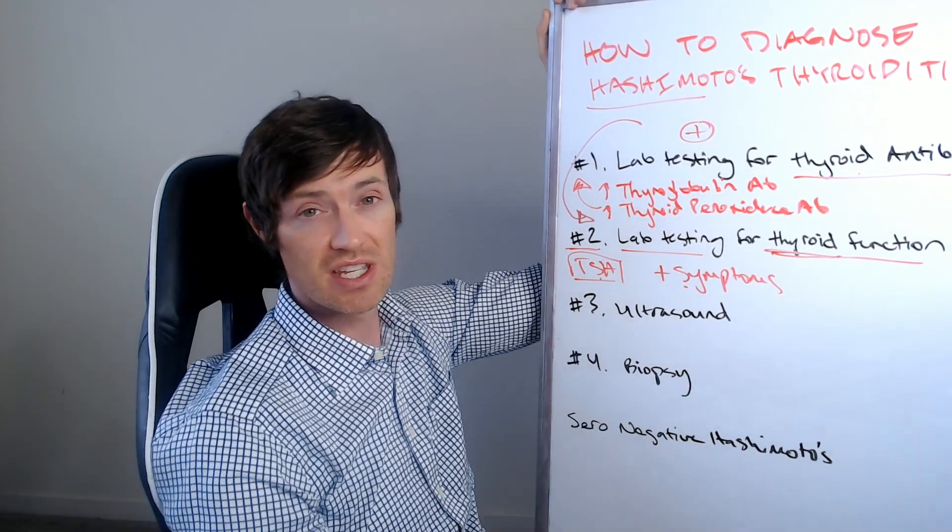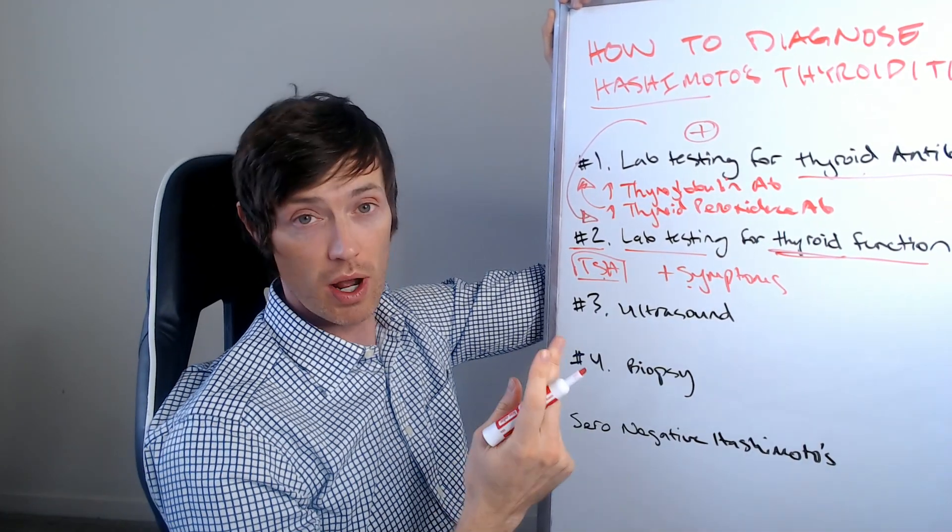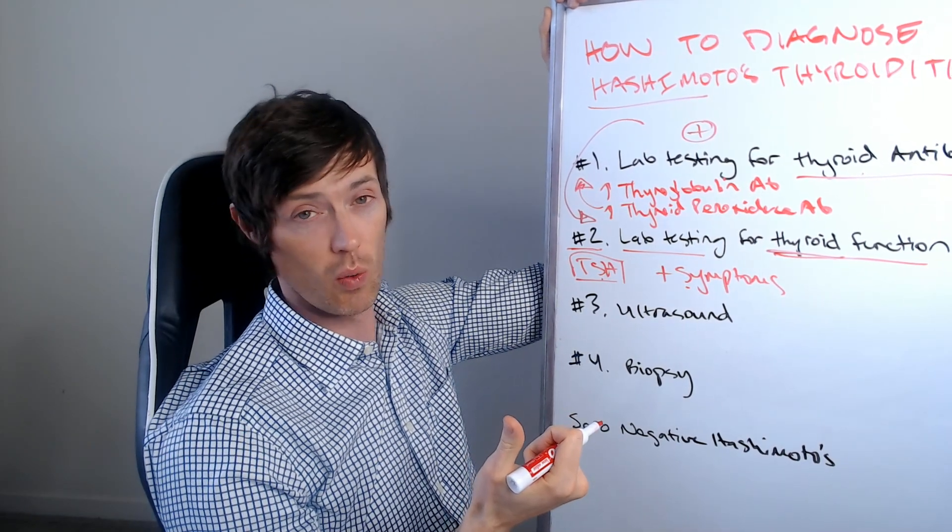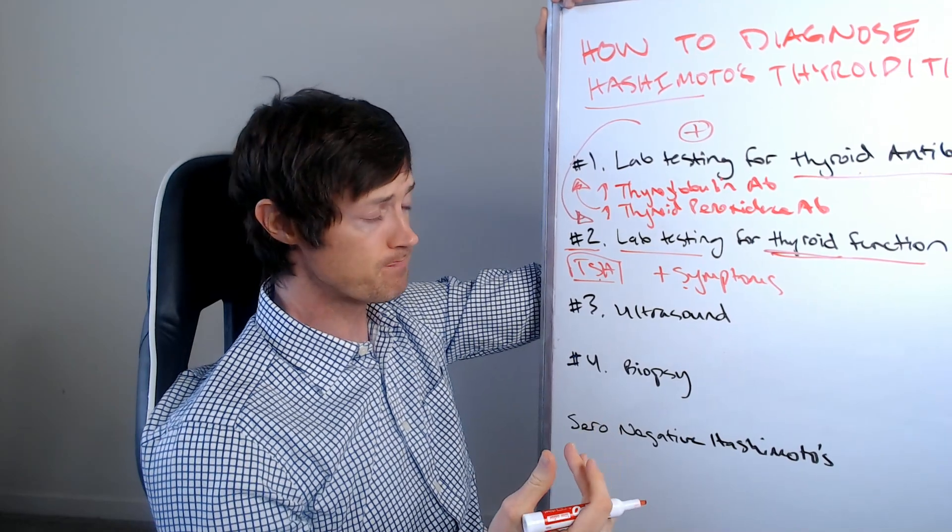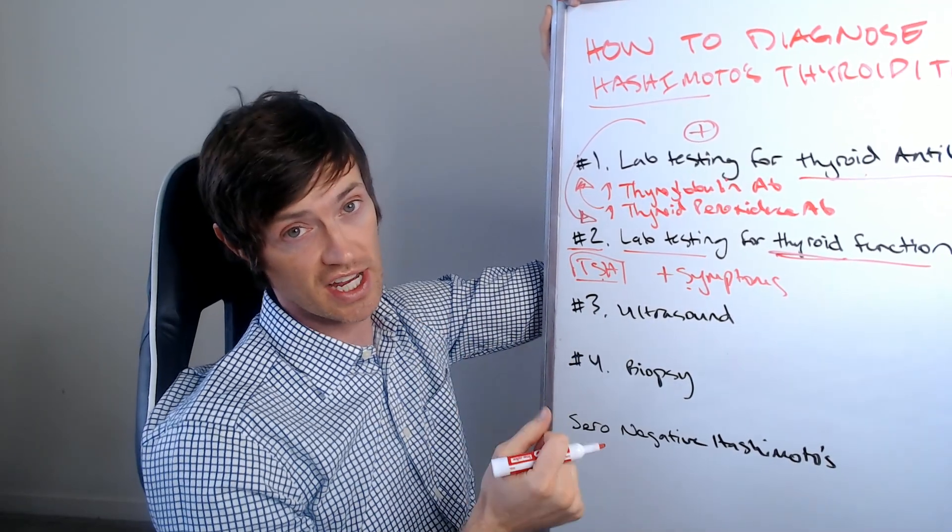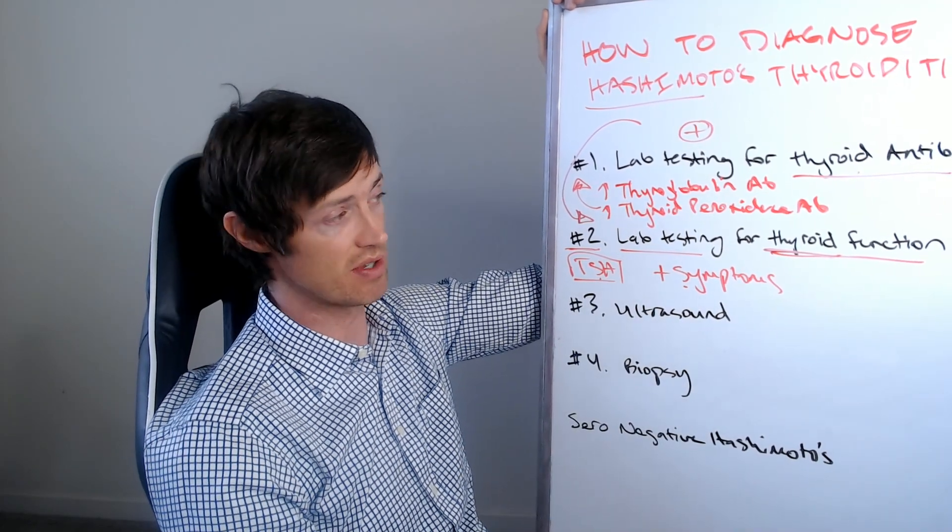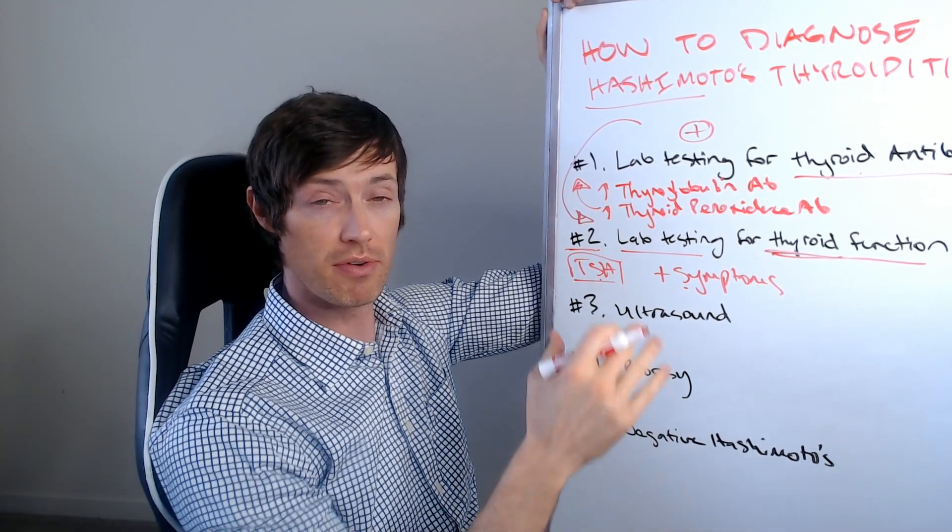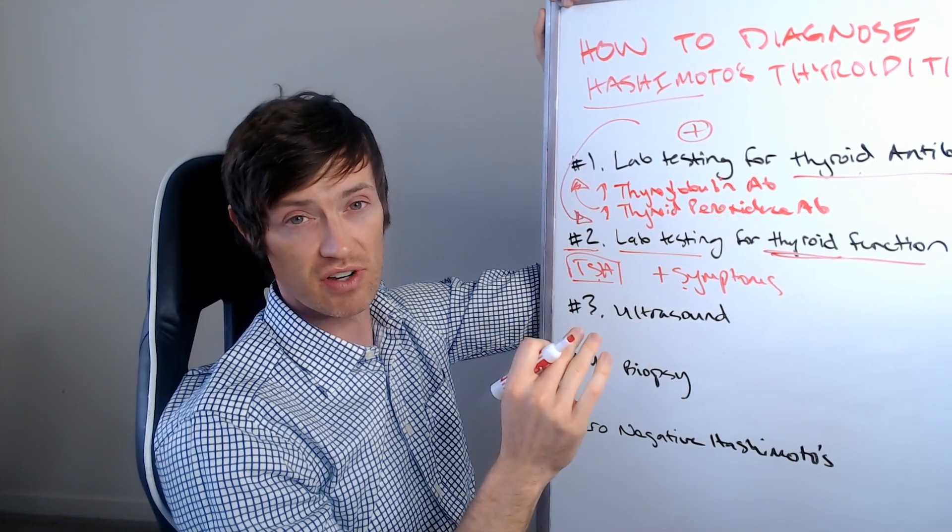But if you just have the presence of these antibodies by itself, and you do not have thyroid symptoms at all, there's one of two options. Either one, those antibodies are going to go away and it was a weird problem like pregnancy which caused it. Or two, you're in early stage Hashimoto's and your body actually hasn't damaged your thyroid sufficiently to cause those symptoms yet. So they're always a problem if you have the presence of these antibodies, but they do not guarantee the diagnosis of Hashimoto's by themselves.